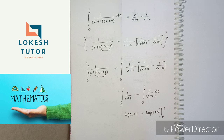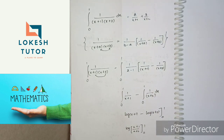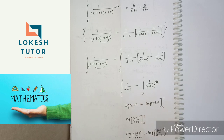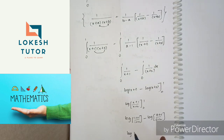Applying the limits 0 to 1. Using the rule log m minus log n equals log (m by n), we get log of (x plus 1) by (x plus 2), evaluated from 0 to 1. The value is log (1 plus 1) by (1 plus 2) minus log (0 plus 1) by (0 plus 2), which gives log (2 by 3) minus log (1 by 2).